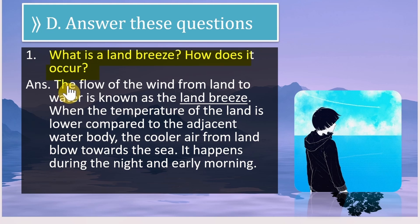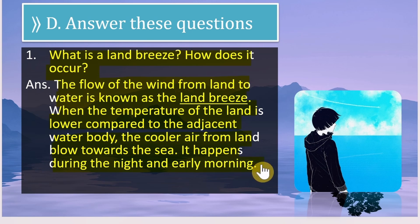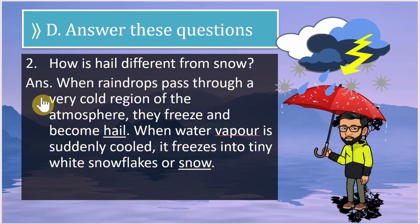The flow of wind from land to water is called land breeze. When the temperature of the land is lower compared to the adjacent water body, the cooler air from the land blows towards the sea. This happens during night and early morning.